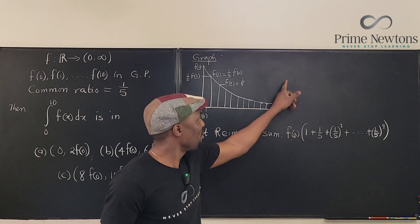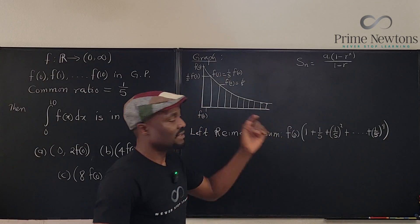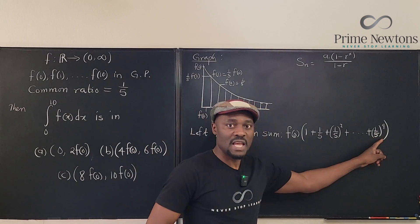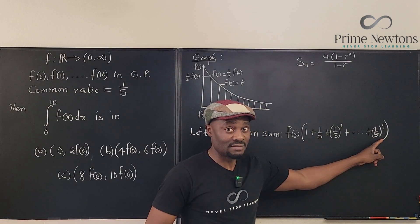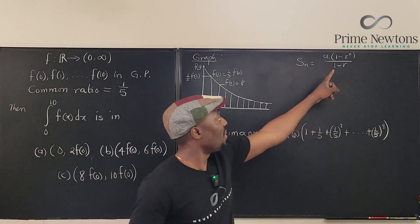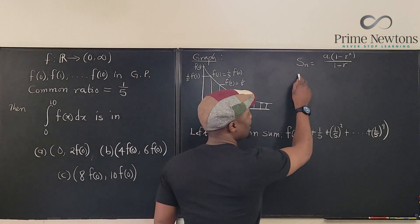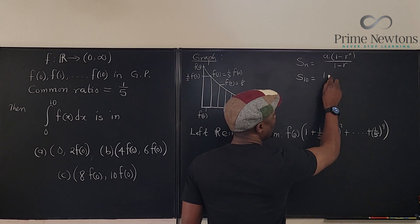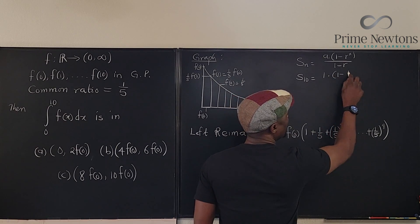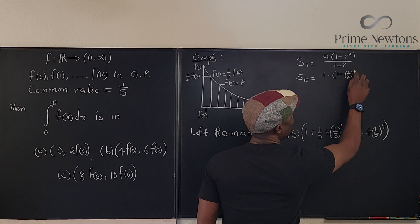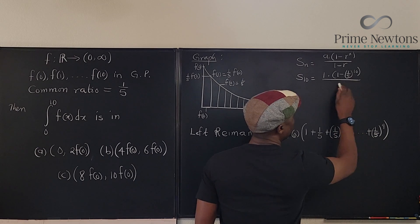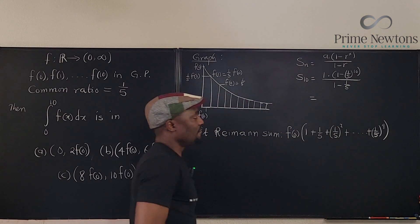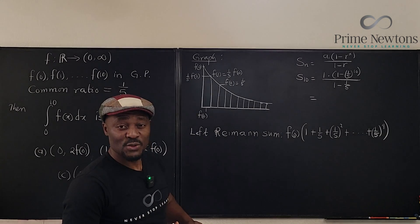Now what we have here is the sum of a geometric sequence or what you call a geometric progression. So just use the formula to find this sum and see how many times it multiplies f—that's all you need to do. Just to save space I'm going to write the formula here. So the number of terms in this sequence is 10.